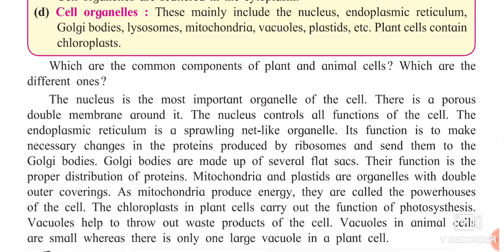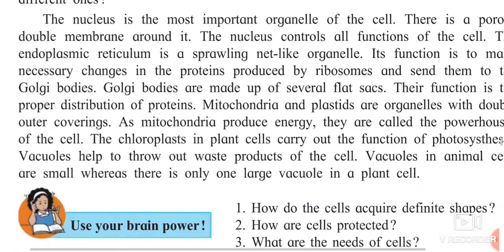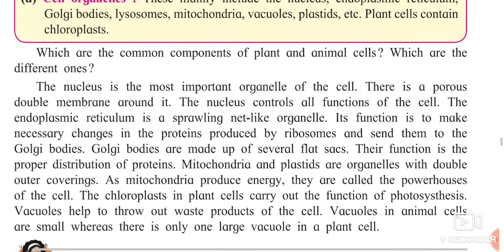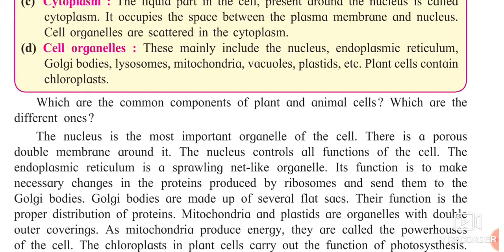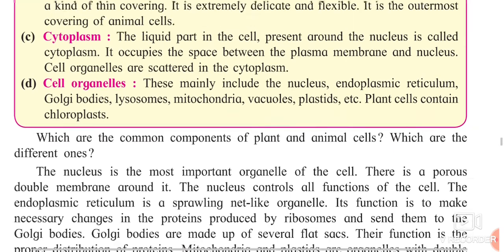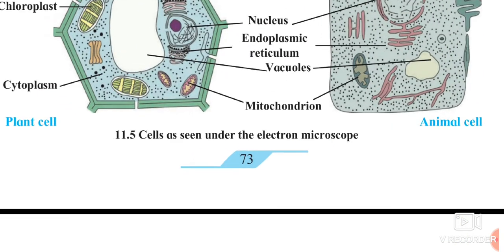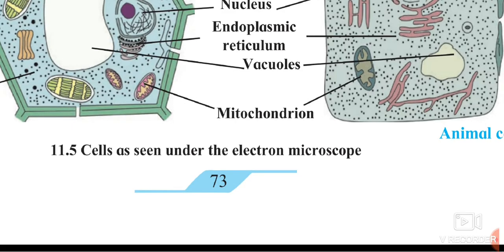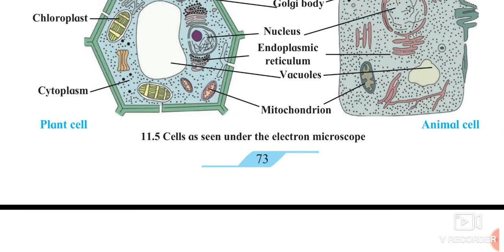The next part is mitochondria. Mitochondria and plastids are cell organelles which have a double covering. Mitochondria produces energy and is also said to be the powerhouse of the cell. Just like power banks give your phone immediate charging when you are away from home, when the cell is tired, mitochondria provides the energy needed by the cell.